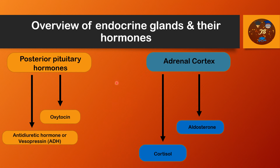Next come the posterior pituitary hormones. The first is anti-diuretic hormone, also called vasopressin or ADH. It causes the kidney to retain water, thereby increasing the water content of the body and maintaining water volume. In high concentrations, it also causes constriction of blood vessels throughout the body and elevates blood pressure.